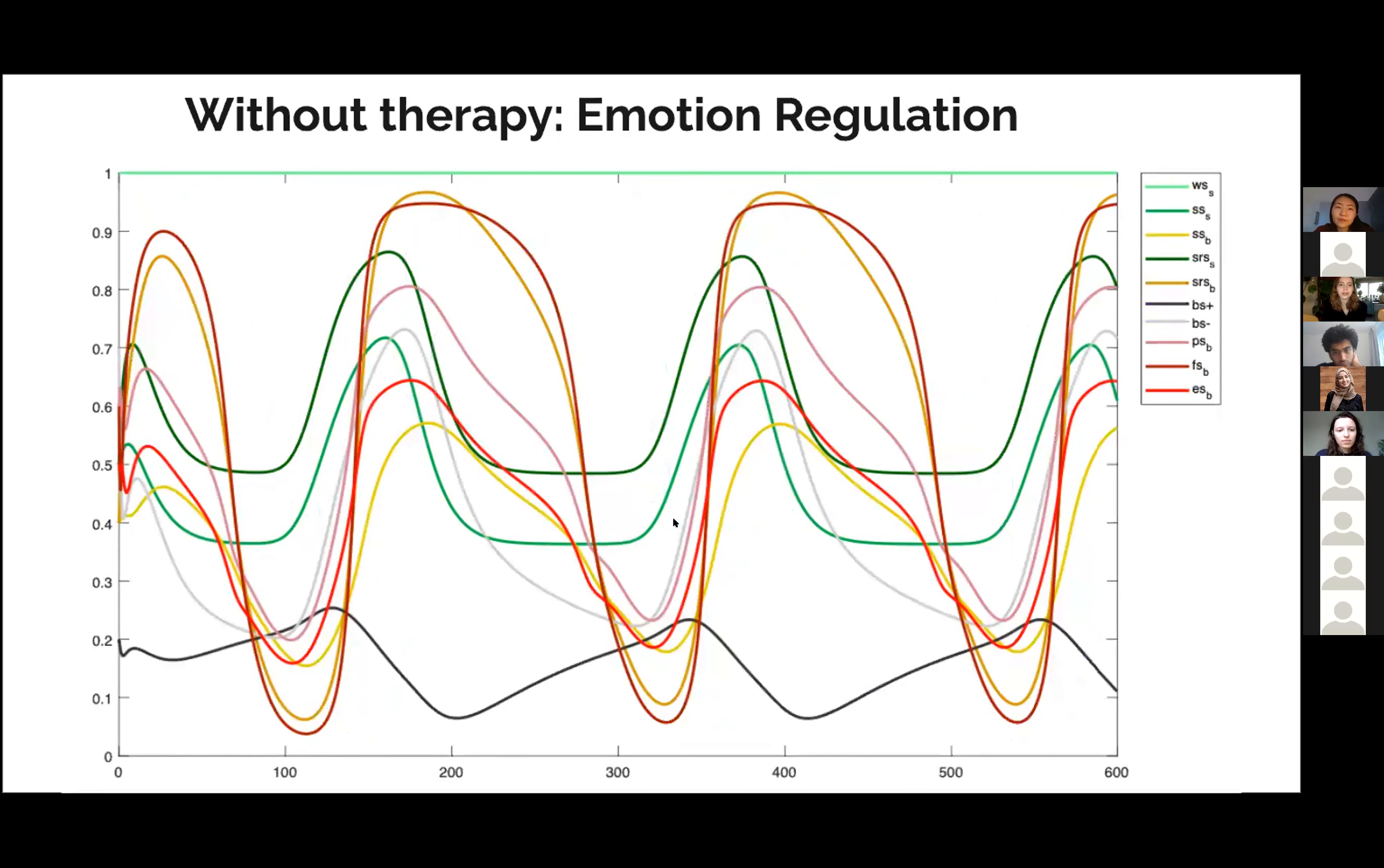Here we see the emotion regulation in a situation without therapy. The reddish lines here are negative beliefs, as well as the grayish lines. So these are the negative emotions, and we see it also goes up and down. But it's always quite often quite higher than the positive belief, which is the black line below. So there are some mood swings, but over time this person stays more negative than positive.